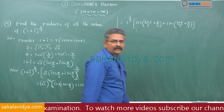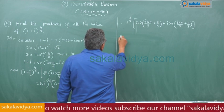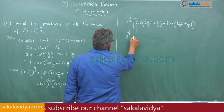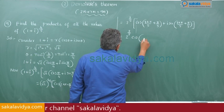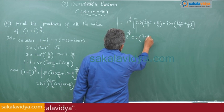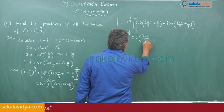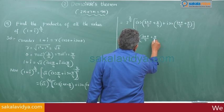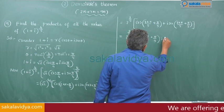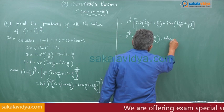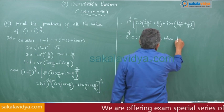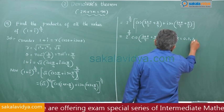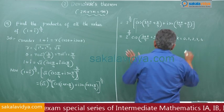For convenience, this can be written as 2 to the power of 2 by 5 times cis(8kπ/5 + π/5), where k is equal to 0, 1, 2, 3, 4 — giving five values.